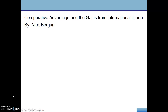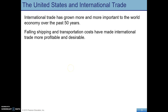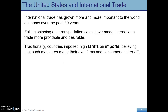Earlier in the course we looked at comparative advantage. Here we're going to take a look at it again as it applies to international trade. Countries have always engaged in trade, and it's become more and more important even in the last 50 years. Some reasons for this would be falling shipping and transportation costs, which makes trade easier and also more profitable.